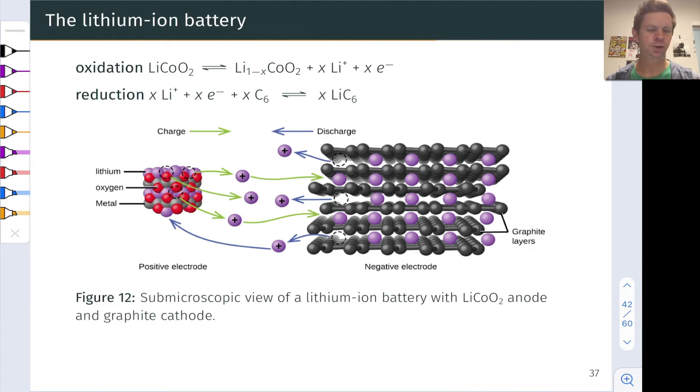Hugely, hugely important. And during discharge, we see the spontaneous process, the lithium metal undergoing oxidation to lithium plus. And when the cell is charging, lithium cations are converted back to lithium metal atoms in this C6 matrix.